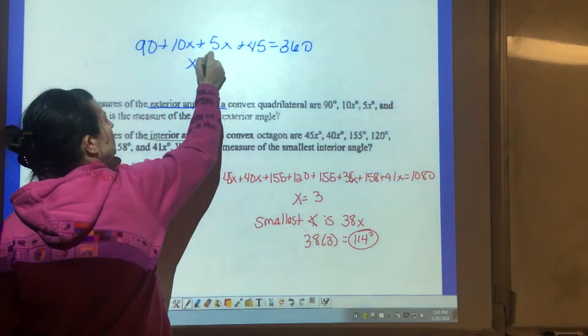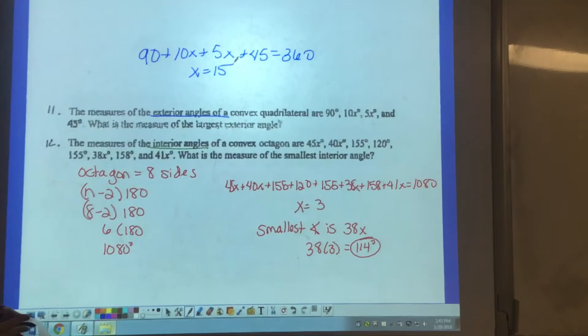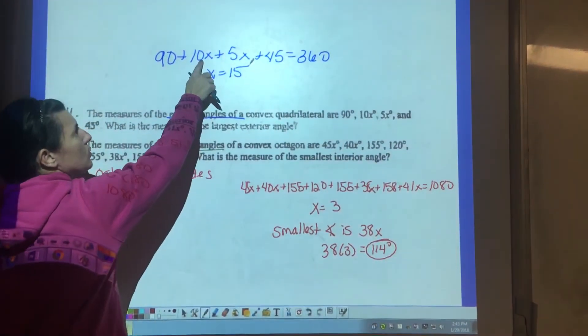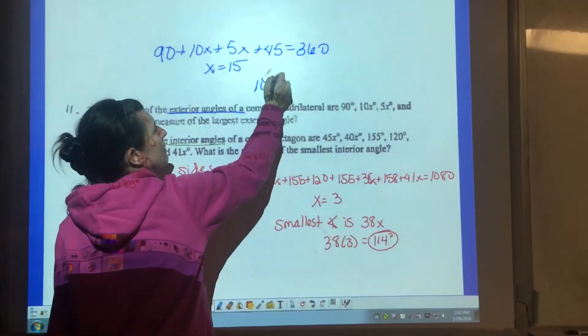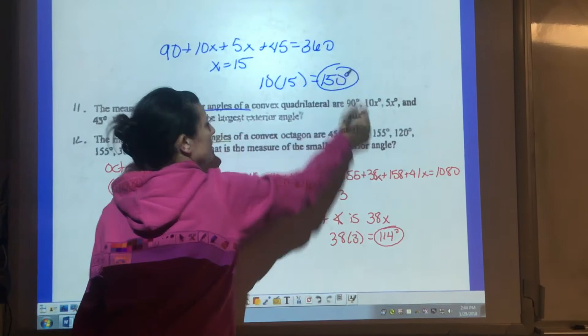Now they're asking me just for the largest exterior angle. You could go through and figure out which one's the largest, but I can plug this back into 10x. So 10 times x gives me 150, which would be my largest angle.